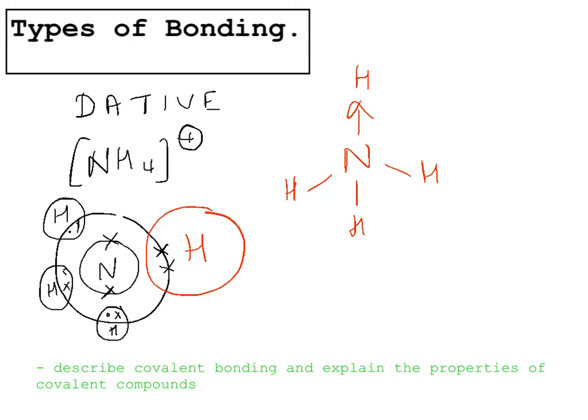Now some questions in an exam paper will ask you what is happening here, or to describe what a dative bond is. To do that you've got to say where the electrons are coming from and the direction of the donation. So to get the mark here you'd say that the lone pair on NH3 is donated to the H plus. You must say lone pair and you must say where it's coming from, the whole compound, not just the nitrogen. It's coming from the NH3 and say where it's going to, the H plus ion.